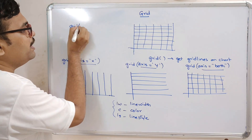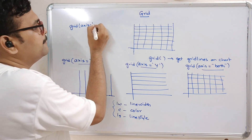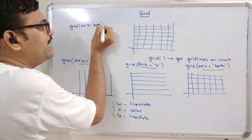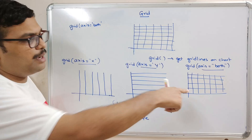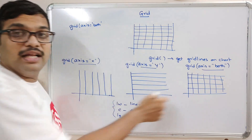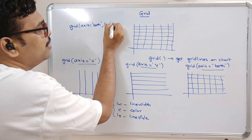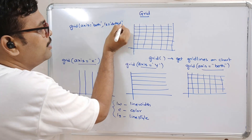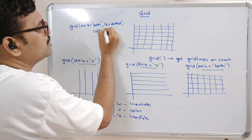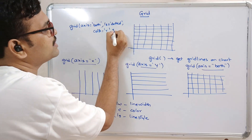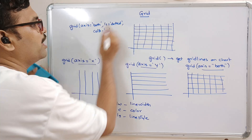We can give axis equal to both — by default it will be both if you are not specifying the axis parameter. The complete grid line should appear. Similarly, ls equal to some style — I will go with dotted — and color equal to some red.